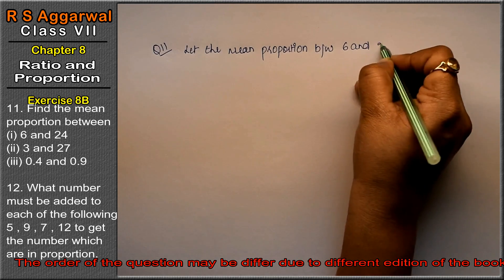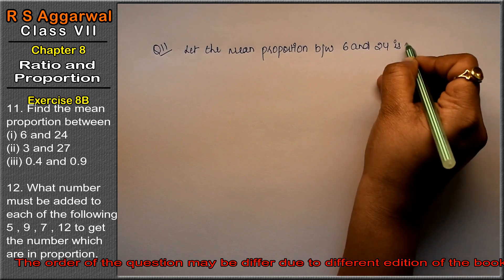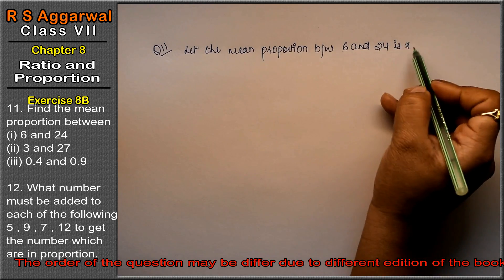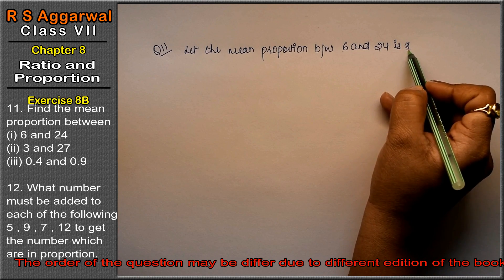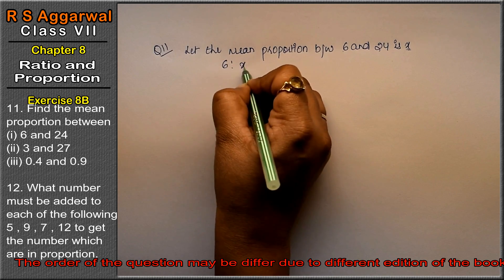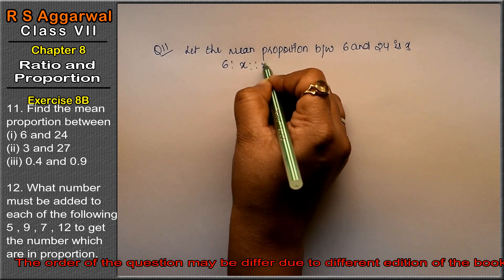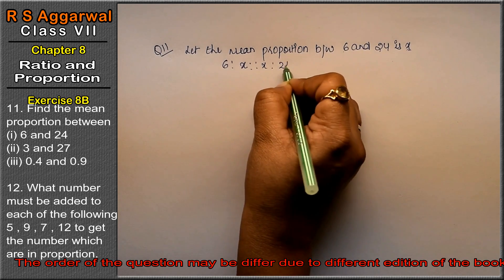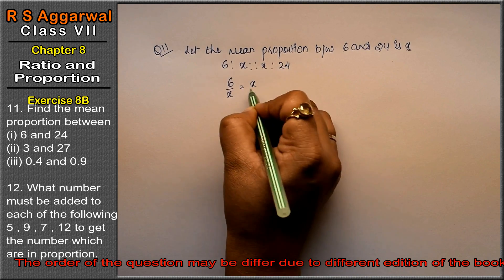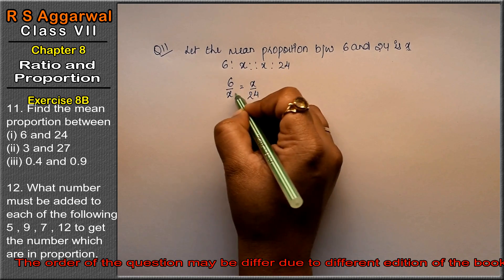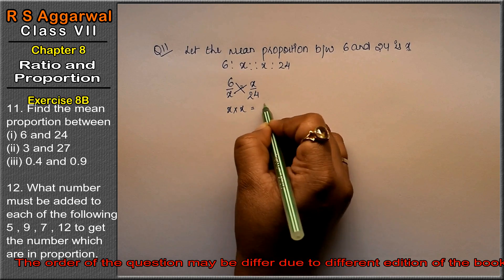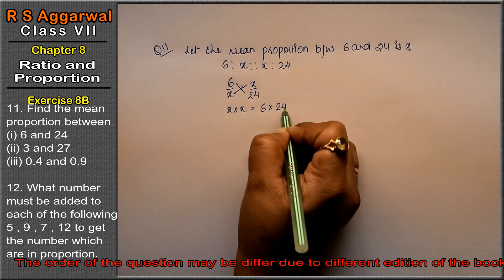So there are 3 proportions: 1st, 2nd, and 3rd. The mean proportion is the second one, which is x. So we write it as: 1st proportion upon 2nd proportion equals 2nd proportion upon 3rd proportion. That gives us 6 upon x equals x upon 24. Cross multiply: x into x equals 6 into 24.